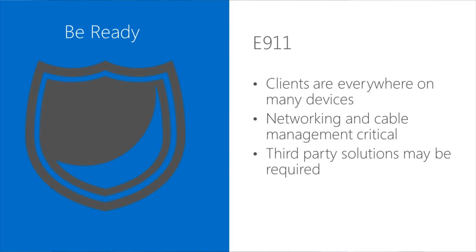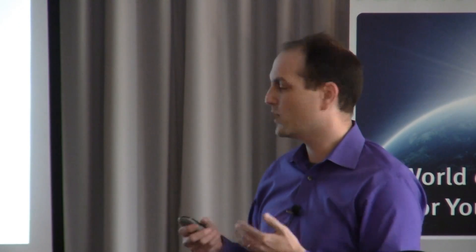E911 — people take this for granted and don't give it the thought they need to. This is more of a unified communications problem than a Lync problem, because the clients are everywhere. It can't just be a phone number tied to an E911 location anymore because you can be logged in at multiple locations at once. You could be roaming, which means networking and cable management become critical. You have to have policies and business processes around this. One low-level network guy just plugging in a cable and moving it to a patch may have just changed their entire E911 location.